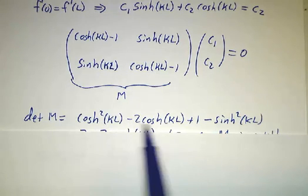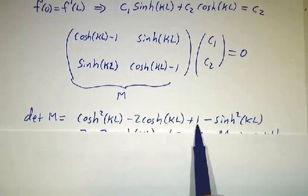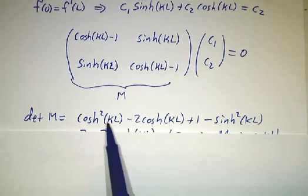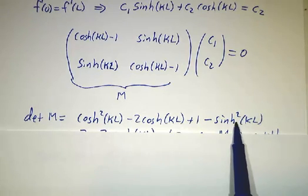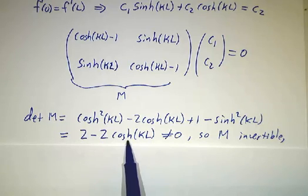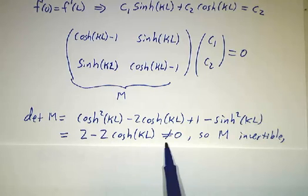The determinant is cosh minus 1 times cosh minus 1, which is cosh² minus 2cosh plus 1, minus sinch². But cosh² minus sinch² is 1, so we get 2 minus 2cosh. And the cosh is always bigger than 1, so 2 minus 2cosh is negative.